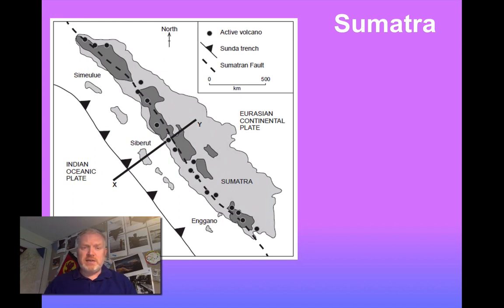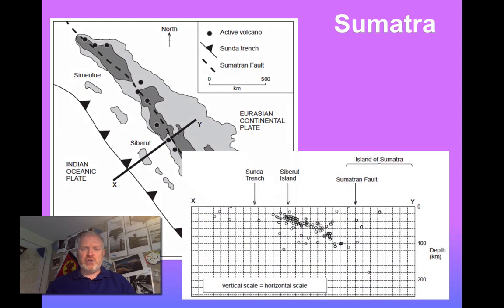To the east of the Sunder Trench, then, we have this big island of Sumatra. Mostly fairly recent rocks, but there are some slightly older ones, some more Mesozoic ones. And then we've got this odd little chain of islands to the west of the main island. Let's think about some of the questions I've asked, as well as this diagram.